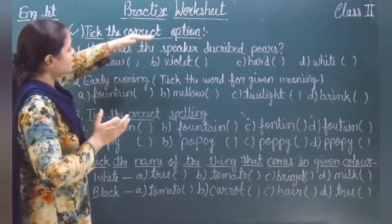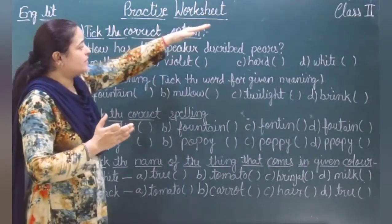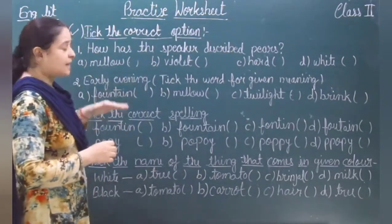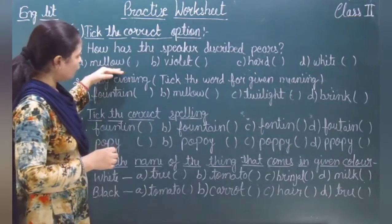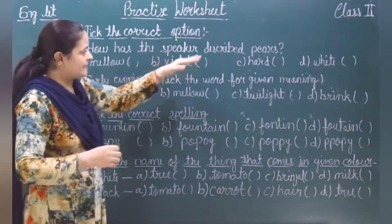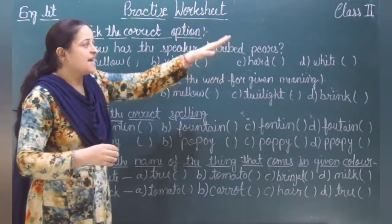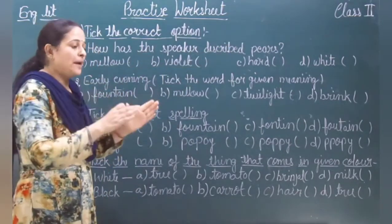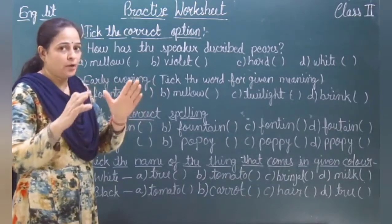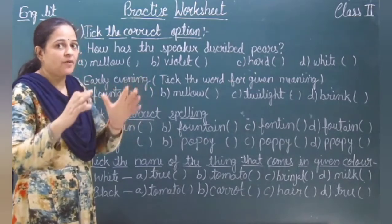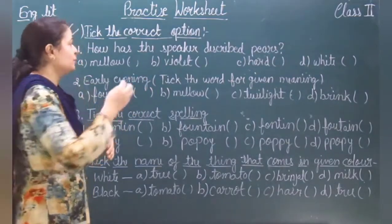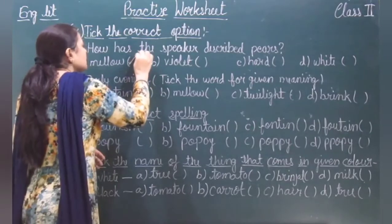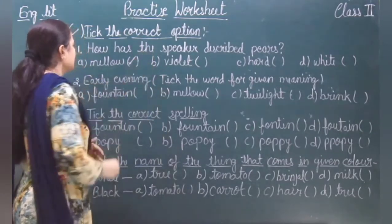How has the speaker described pears? The options are mellow, violet, hard, and wine. The lines of the poem say pears are yellow, rich, ripe, and mellow. So the answer is mellow.